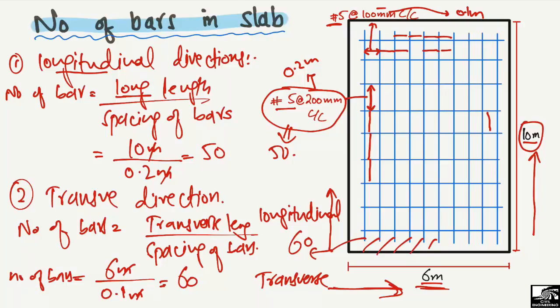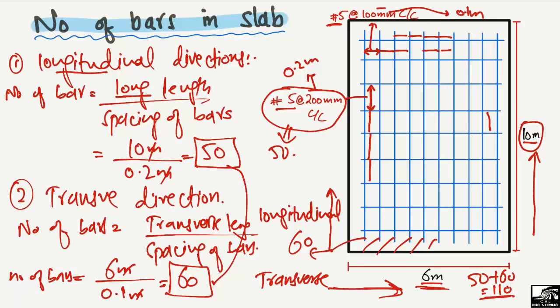To find the total number of bars, we add the longitudinal and transverse bars together: 50 plus 60 equals 110. So 110 number 5 bars are used in total, but with different spacing in each direction. Hope you understand how to find the number of bars in a slab in both directions. Don't forget to subscribe to our channel. Thank you for watching.